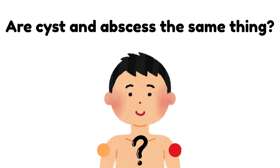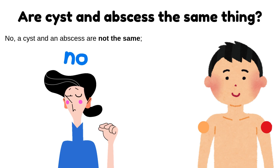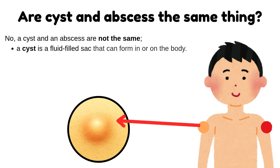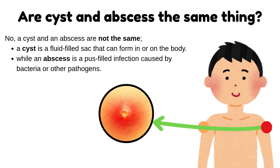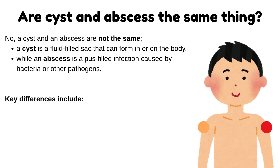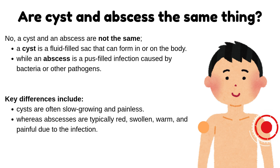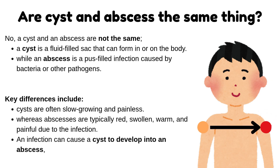Are a cyst and abscess the same thing? No, a cyst and an abscess are not the same. A cyst is a fluid-filled sack that can form in or on the body, while an abscess is a pus-filled infection caused by bacteria or other pathogens. Cysts are often slow-growing and painless, whereas abscesses are typically red, swollen, warm, and painful. An infection can cause a cyst to develop into an abscess, but an abscess does not originate as a cyst.